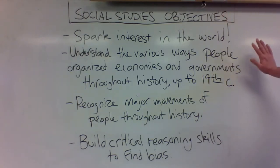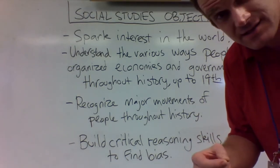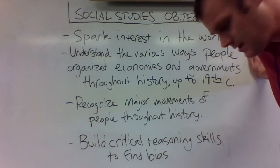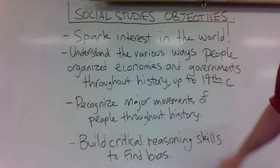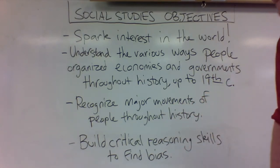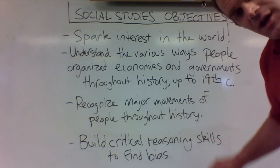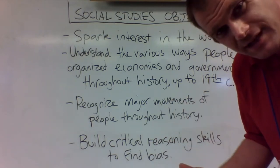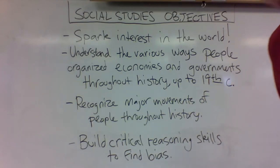We're trying to prepare students to discuss democracy and the history of the United States in middle school in seventh and eighth grade. We'll discuss things like monarchy, oligarchies, different types of government, and different types of economies. Another major objective is to recognize major movements of people throughout history — migration patterns — incorporating geography lessons as well, so students will know why people are moving from one part of the world to another, what their reasoning is, or whether they were forced to do so.